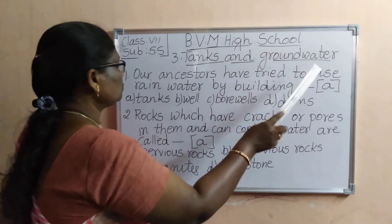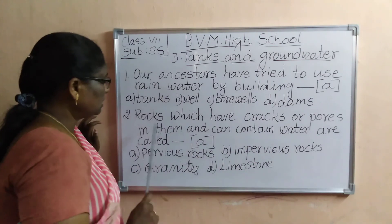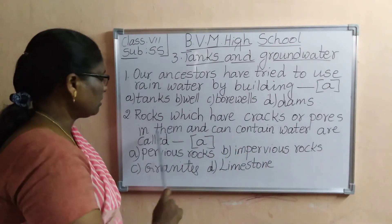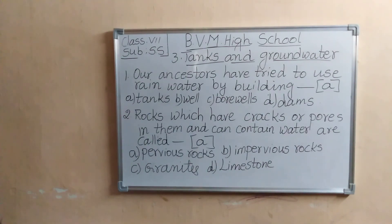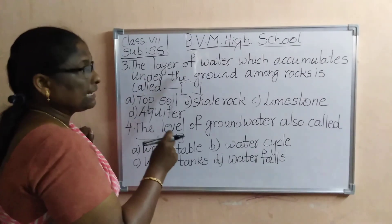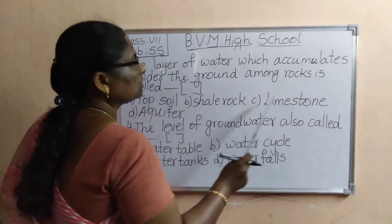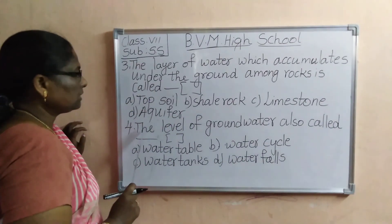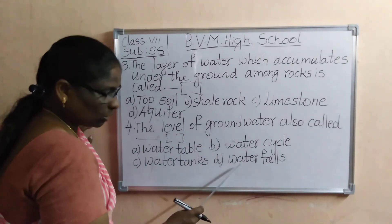Our ancestors have tried to use rainwater by building tanks. Rocks which have cracks or pores in them and can contain water are called pervious rocks. Third one: the layer of water which accumulates under the ground among rocks is called dash. Options: topsoil, shale rock, limestone, aquifer. Fourth one: the level of groundwater is also called dash. Options: water table, water cycle, water tanks, waterfalls.